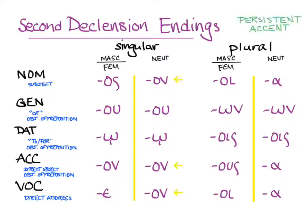Nouns have persistent accent — the accent wants to stay the same type in the same place as it is on the nominative singular form. Notice that the neuter nominative, accusative, and vocative singular are all the same, and you need context to tell the difference. The plural forms of the neuter nominative, accusative, and vocative are also the same. The neuter nominative, accusative, and vocative plural ending is always a short alpha, even beyond the second declension. Also, the masculine and feminine genitive and dative singular endings are the same as the neuter ones, and the same goes for the plural.